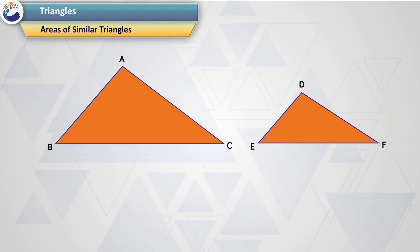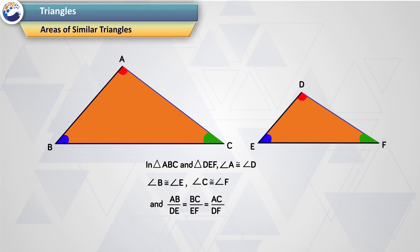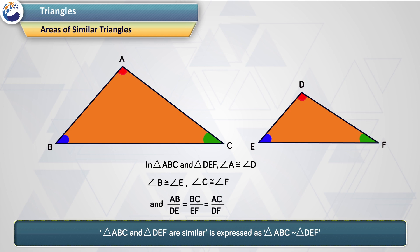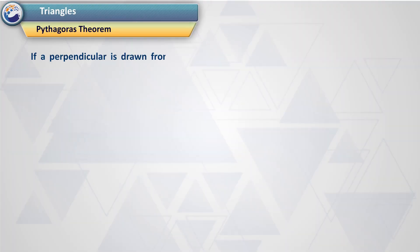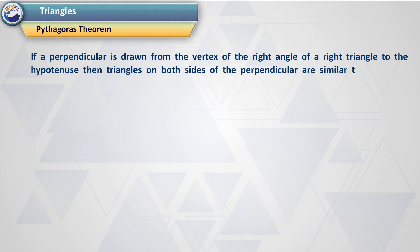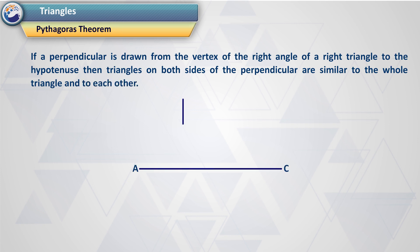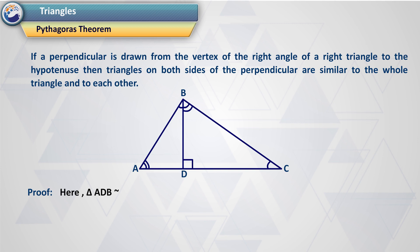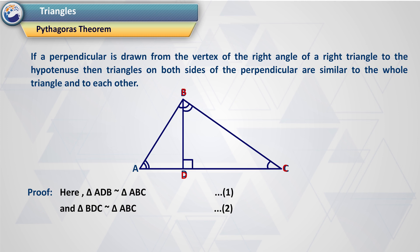Areas of similar triangles. Theorem: the ratio of the areas of two similar triangles is equal to the square of the ratio of their corresponding sides. Pythagoras theorem: if a perpendicular is drawn from the vertex of the right angle of a right triangle to the hypotenuse, then the triangles on both sides of the perpendicular are similar to the whole triangle and to each other. Proof: triangle ADB is similar to triangle ABC (equation 1) and triangle BDC is similar to triangle ABC (equation 2). From equations 1 and 2, triangle ADB is similar to triangle BDC.